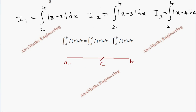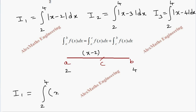Coming to I1, we have |x minus 2| with limit from 2 to 4. Before x equals 2, |x minus 2| is negative, and after 2 it is positive. So from 2 to 4, it is only the positive part x minus 2. Since we don't have any negative part in the interval, I1 equals integral from 2 to 4 of (x minus 2) dx.